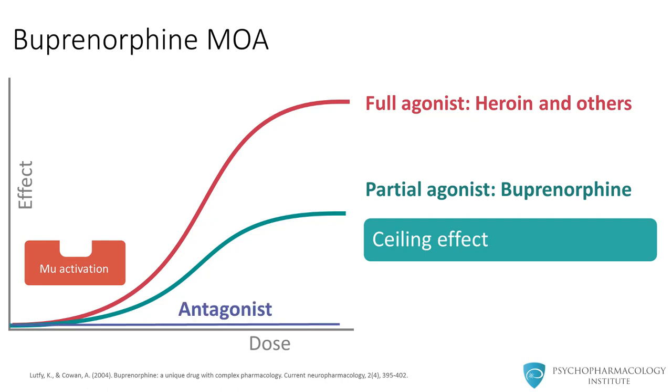Antagonists, on the other hand, actually attach to the receptors but never activate them. Therefore, antagonists, unlike both partial or full agonists, never activate the receptors.